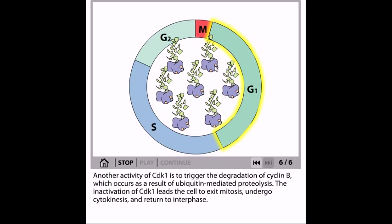The inactivation of CDK1 leads the cell to exit mitosis and undergo cytokinesis. Cytokinesis means the division of the cytoplasm. Right after the ubiquitination of cyclin B, this is mediated via the presence of other types of proteins inside the cell as well as CDK1's presence.